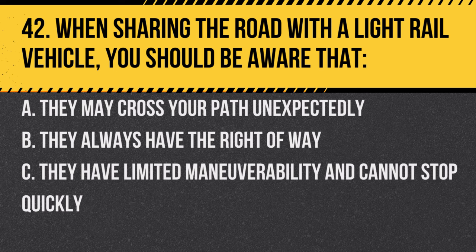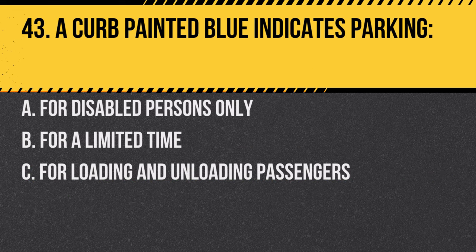Question 42. When sharing the road with a light rail vehicle, you should be aware that: a. They may cross your path unexpectedly. b. They always have the right of way. c. They have limited maneuverability and cannot stop quickly. Answer: c. They have limited maneuverability and cannot stop quickly. Be cautious and give them space.